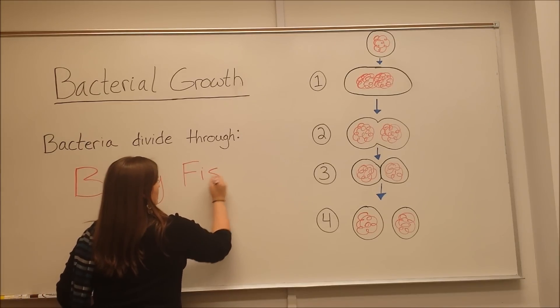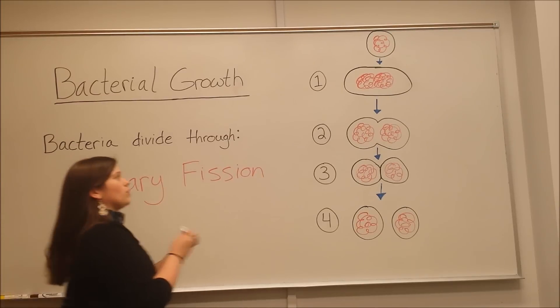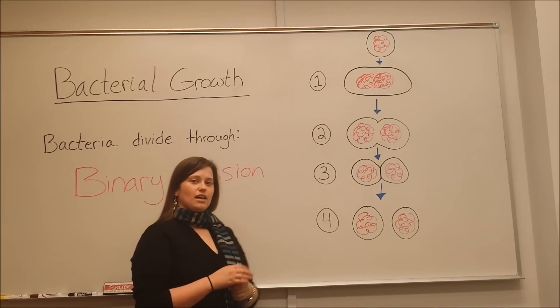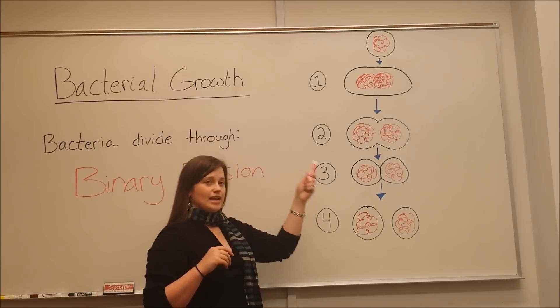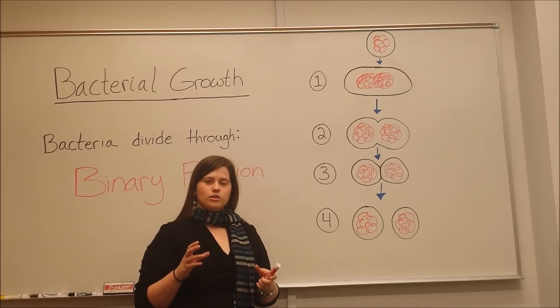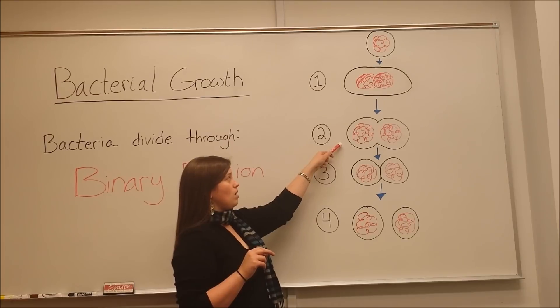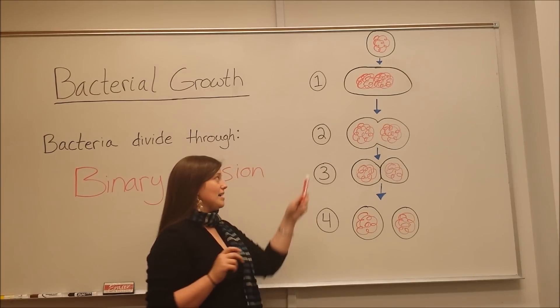So, the way that binary fission works is through these four steps. In step number one, you have the bacterial cell elongating, getting longer. Also, the DNA inside it is being replicated, so you get two sets of DNA. Then, the cell wall and the cell membrane begin to pinch in and divide in step two.